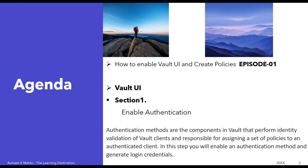Authentication methods are the components in Vault that perform identity validation of Vault clients and are responsible for assigning a set of policies to an authentication client. You enable an authentication method and generate login credentials. In simple terms, there are different authentication methods inside Vault. We are going to use user pass, create a user ID, set a password, assign a policy, and restrict that user to certain permissions when they log into Vault.